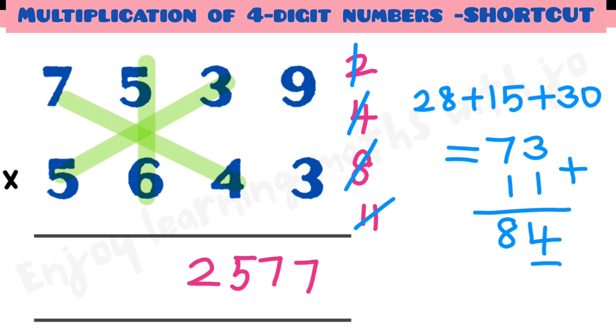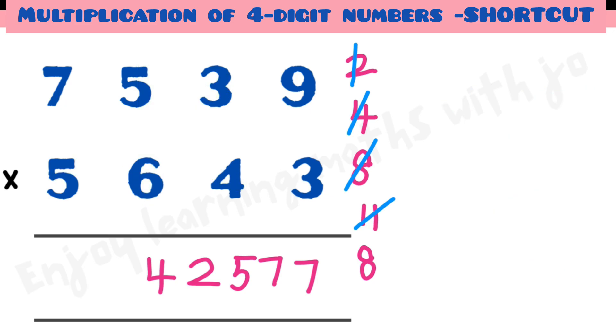So we write 4 here and remaining 8. Next step: 7 times 6 is 42 plus 5 times 5 is 25. We get 67 plus remaining 8 is 75.